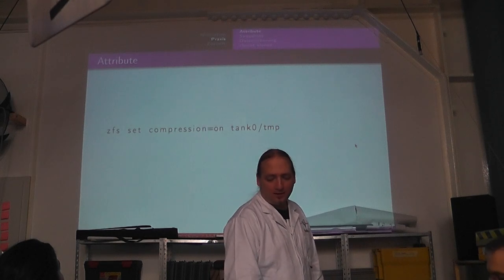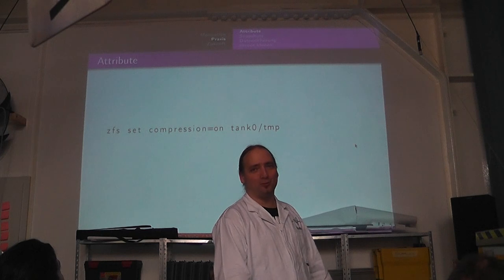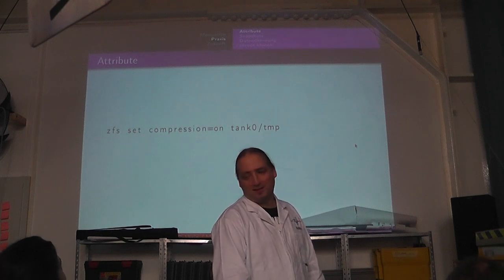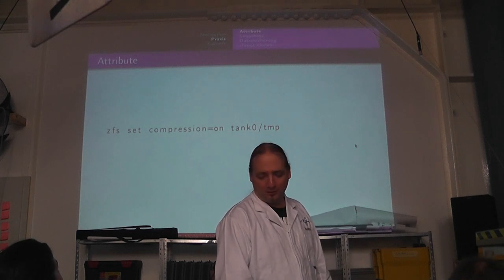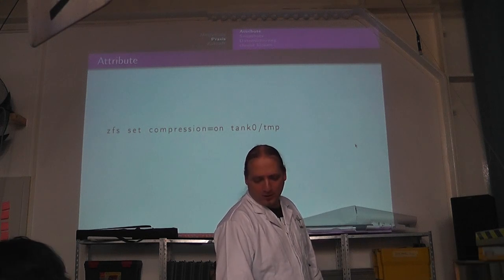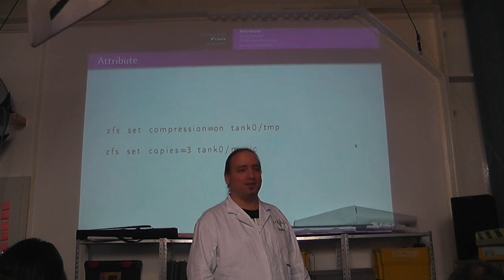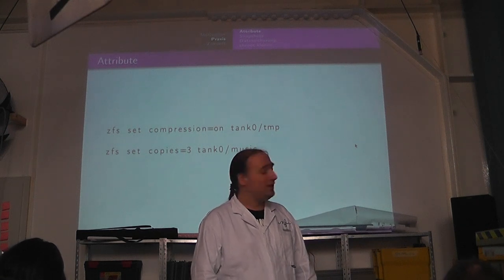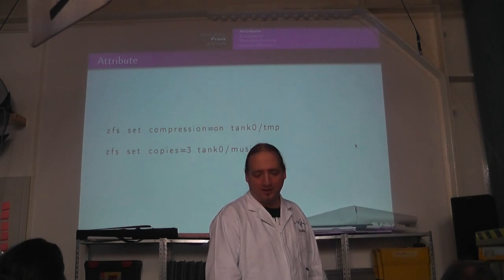Die Attribute, die man setzen kann – die Syntax dieser ganzen Befehle ist sowieso total einfach. Also wenn ich jetzt auf meinem Temp-Verzeichnis aus irgendwelchen Gründen Kompression einschalten würde, würde ich halt sagen: ZFS set compression=on tank0/temp. Und dann werden neue Daten, die darauf geschrieben werden, komprimiert – ich glaube, der Default ist LZJB-Kompression. Oder auch, wenn ich jetzt sage, meine Musik ist mir so wichtig, dass ich da ein bisschen Sicherheit haben will, dann kann ich auch set copies=3 machen. Und dann wird halt alles, was ich von da an in dieses Dataset schreibe, dreimal abgelegt.